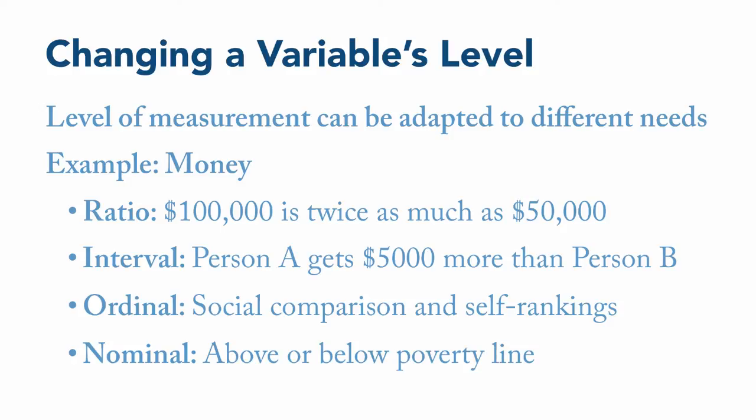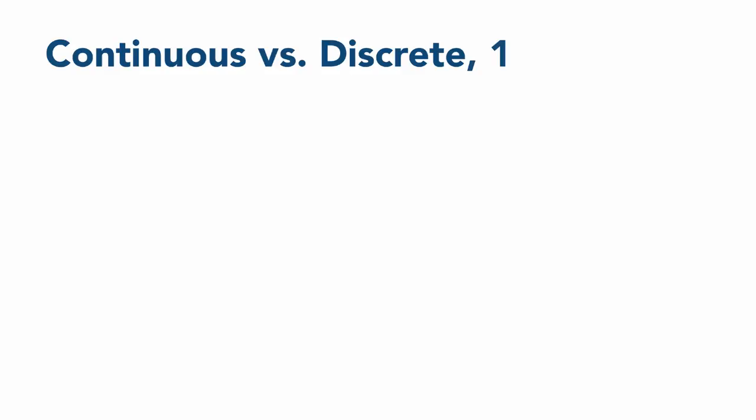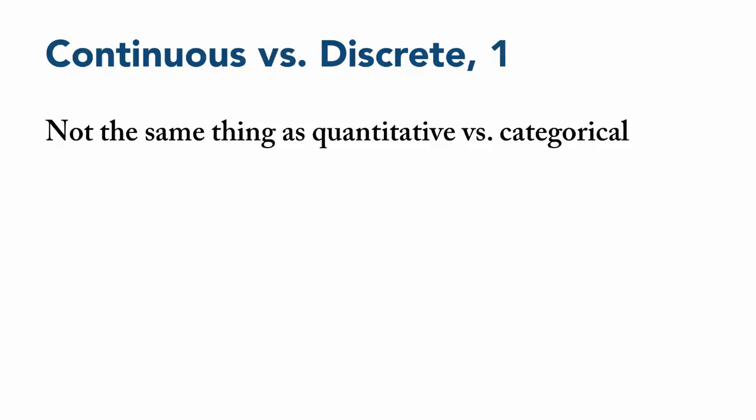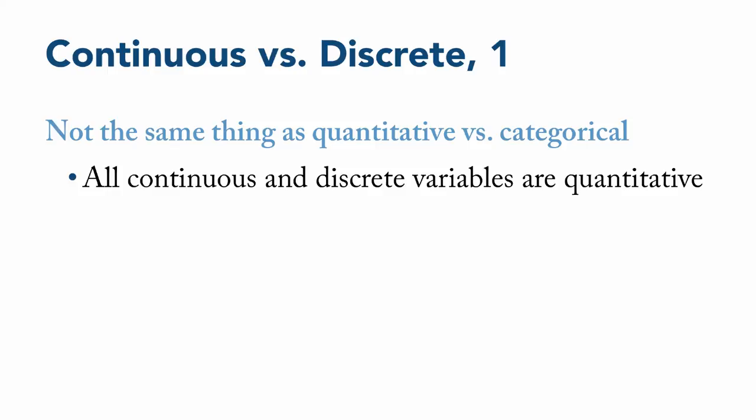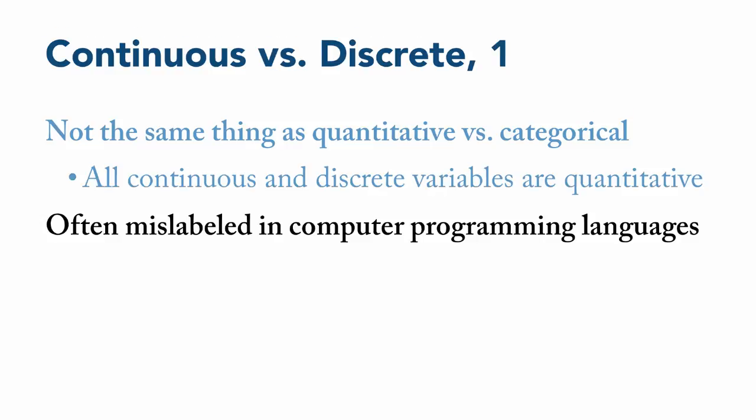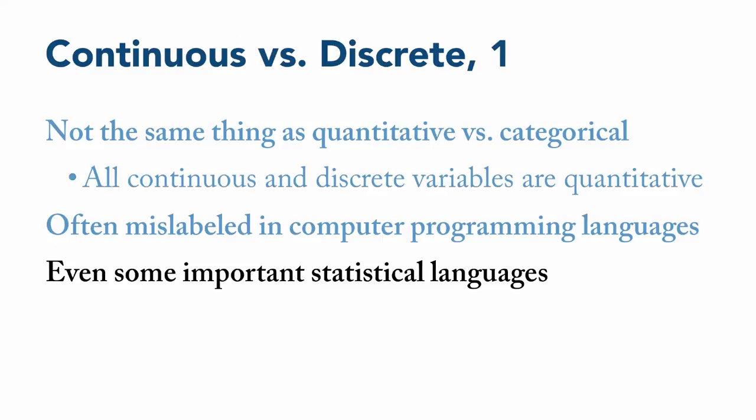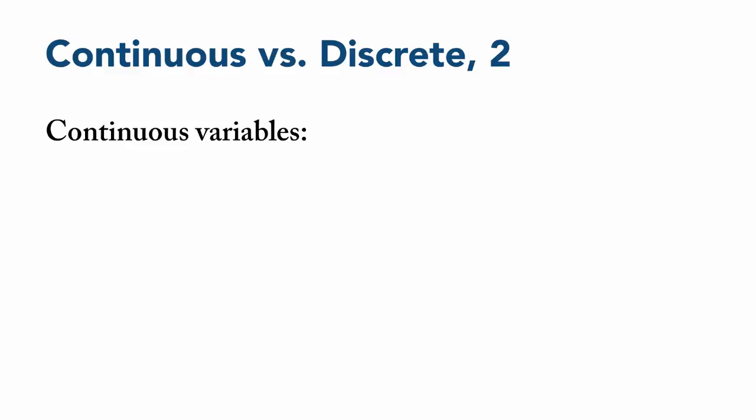One additional distinction that can be important is the difference between continuous and discrete variables. I bring this up because these terms are frequently misused. Often, they're confused with the concepts of quantitative and categorical variables. This is a mistake because all continuous and discrete variables are quantitative and none are categorical. It's frustrating because these terms are often mislabeled and misused in computer programming languages and even some important statistical languages. I think it just creates confusion. What the terms refer to is whether a quantitative value can be measured to an arbitrary level of precision, or whether it comes in non-reducible chunks.